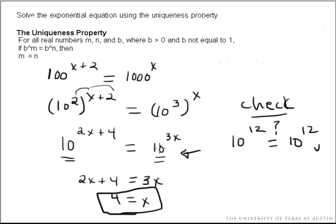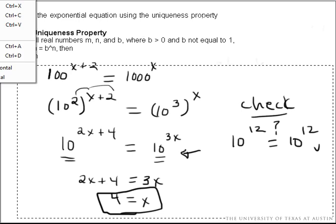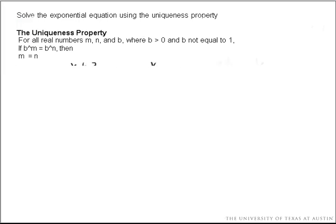Let's work one more that might involve a negative exponent. Clear some of this off. And let's do another. 1 half raised to the 3x equals 8 raised to the x minus 2. Again, you see that we do not have like bases on both sides of our equation.